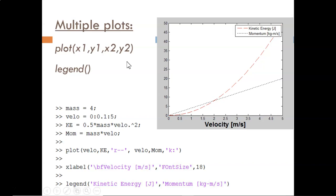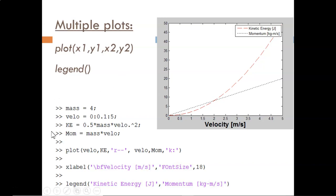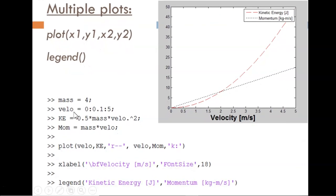Let's look at this example. First, I create the data to plot. The independent variable is velocity, so I declare that as an incremented vector. Then I use velocity to compute kinetic energy, KE, and momentum, mom.